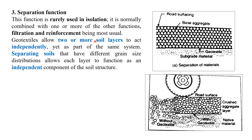Geotextile allows two or more soil layers — the subgrade fine-grained soil and the coarse-grained soil — to act independently. The geotextile placed between them separates the fine-grained subgrade soil from the coarse-grained base aggregate so that the two materials act independently yet as part of the same system.